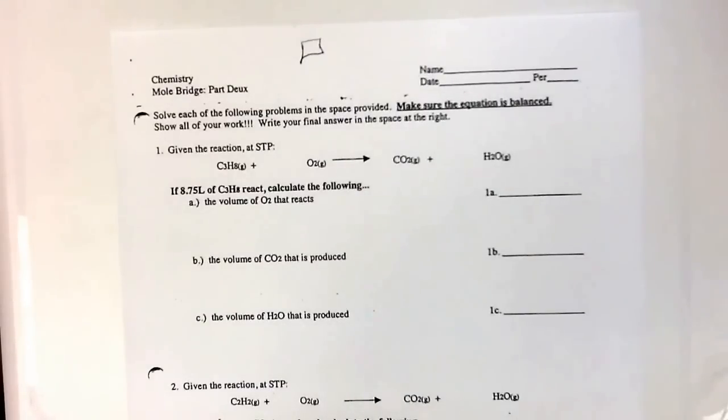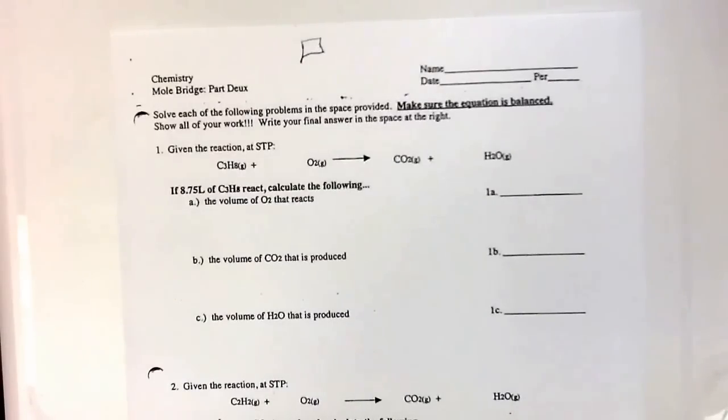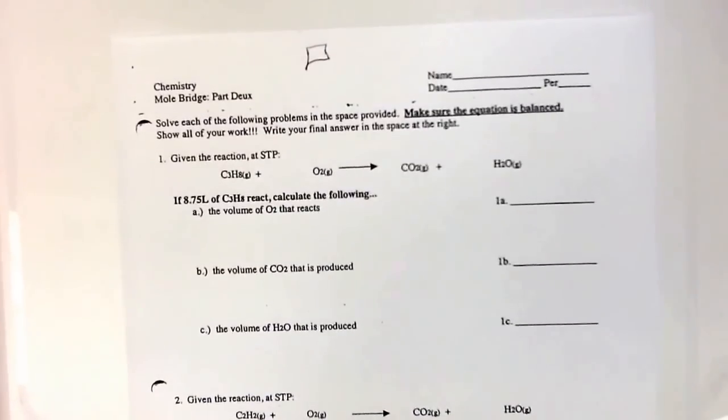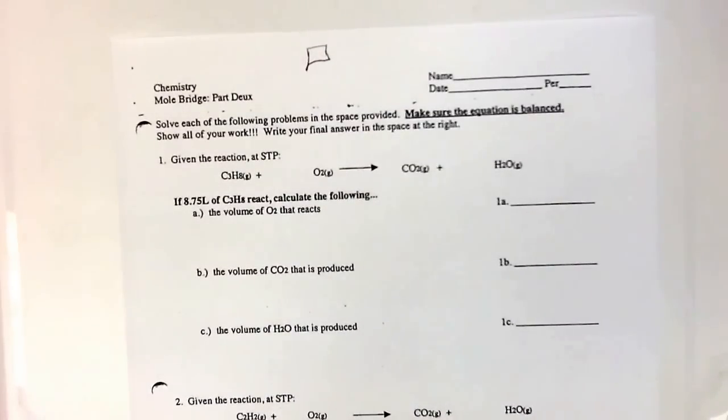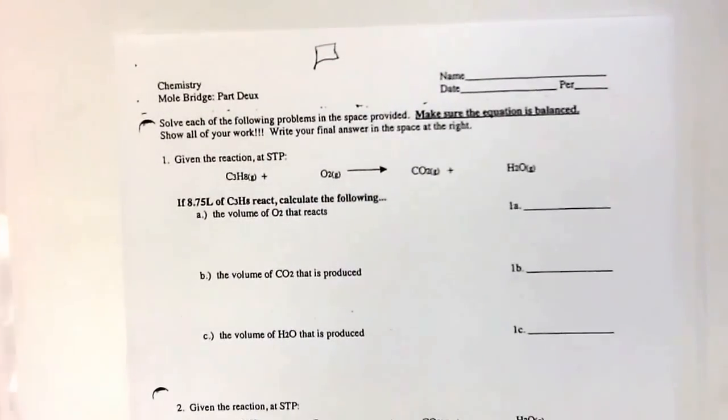For number one, at first it asks you to check to make sure the equation is balanced. So we have the equation up here at the top. We notice that it's not balanced. So in balancing it, the first thing you want to do is check to see if your hydrogens are balanced.